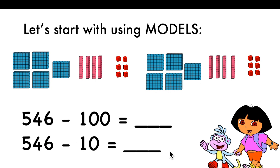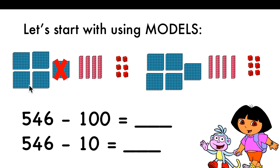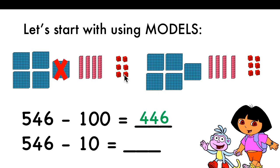Again, when you're taking away hundreds, you will take one block of 100 away. So 500 will change to 400. Tens and ones stay the same: 446.